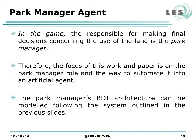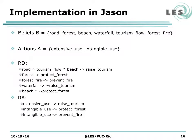In the game, the responsible for making final decisions concerning the use of the land is the park manager. Therefore, the focus of this work is on the park manager role and the way to automate it into an artificial agent. The park manager's BDI architecture can be modeled following the system outlined in the previous slides. For instance, suppose the available actions are extensive use and intangible use of the land, and the agent has the following beliefs about the area: road, forest, beach, waterfall, tourism flow, and forest fire. Then the desire rules and decision rules were modeled as shown in the slide.